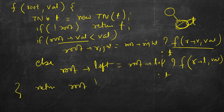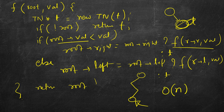Finally, return root. As for time complexity: the insertion follows one path down the tree. In the worst case the tree may be skewed and not balanced, so it can take O(n) time. The recursion stack space is also O(n) in the worst case. So both time and space complexity are O(n).